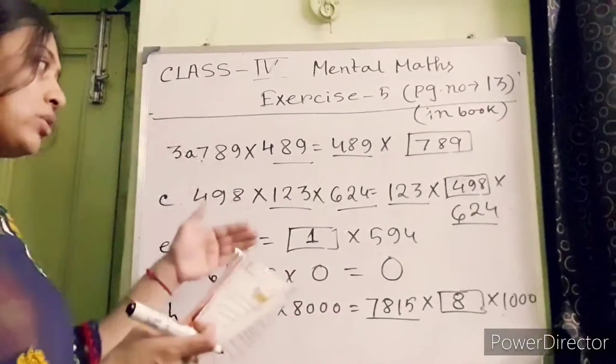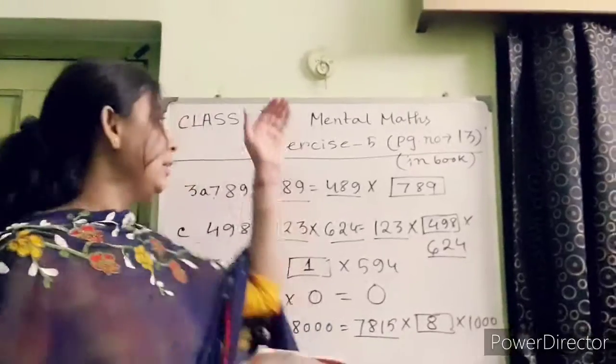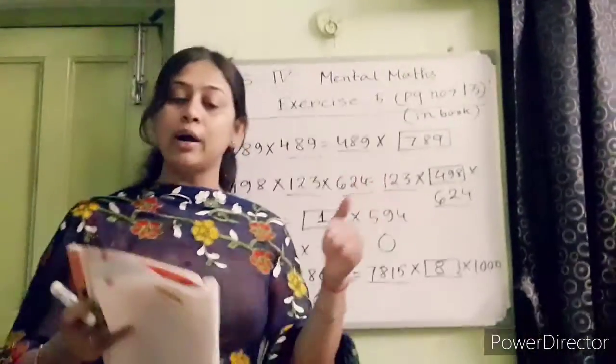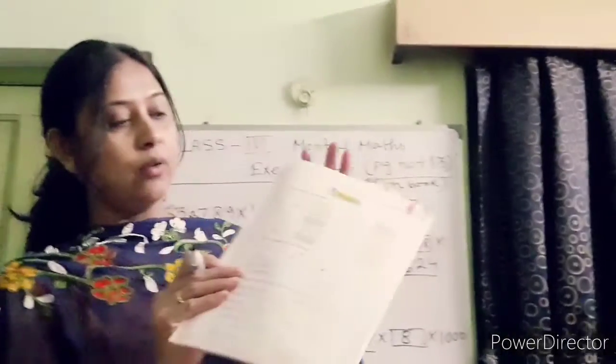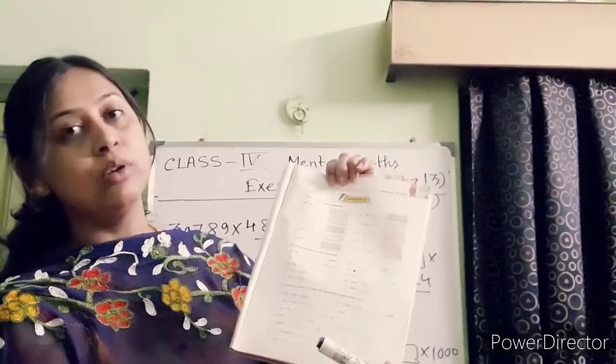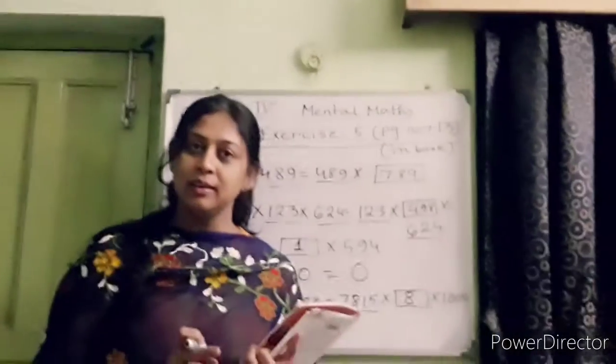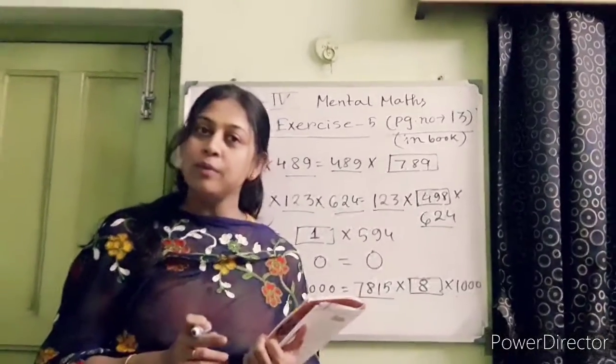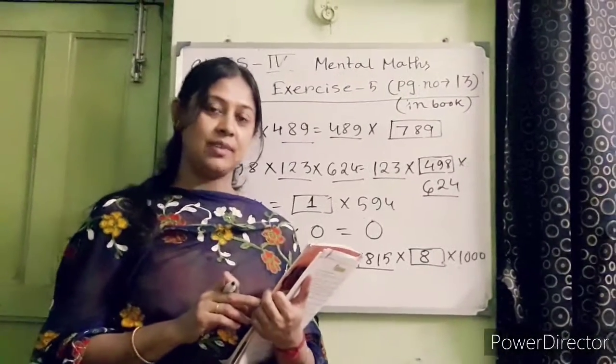So in this way, the other remaining portion you will solve by yourself. From 1 to 3, you will solve in your mental mastery book. Everyone try to solve it. If you face any problem for solving this math, you can ask me. Thank you.